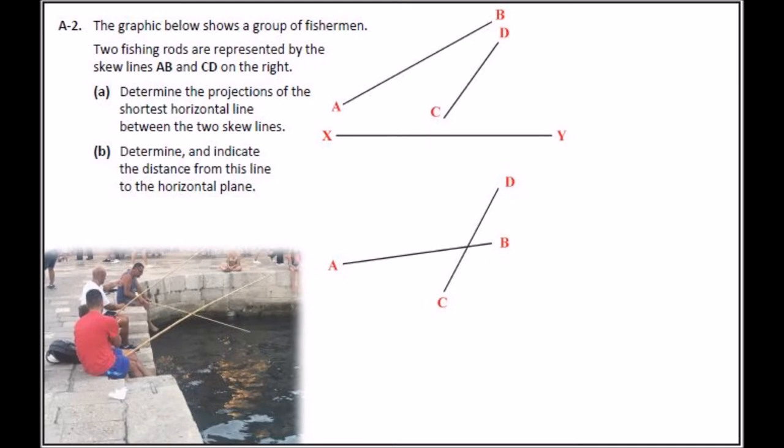A2, then skew lines, which I predicted in the predictions video. Not much else came up in the predictions, but this one was in it. So skew lines, determine the projection shortest distance line and then indicate the distance of the line. So again, nice question, straightforward enough.